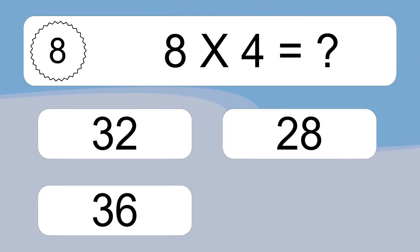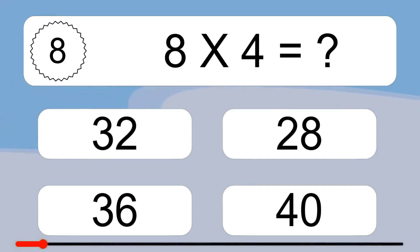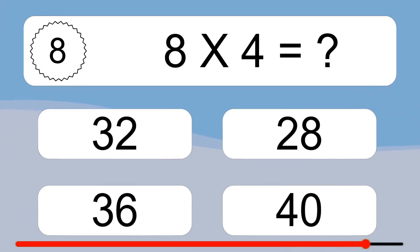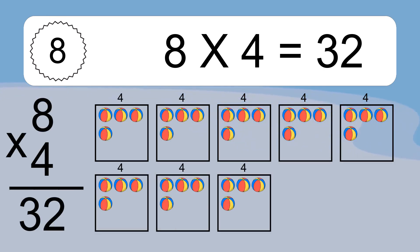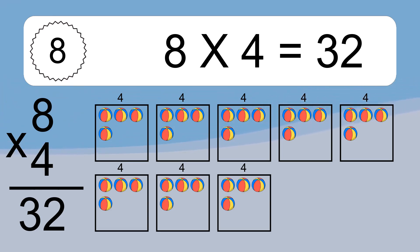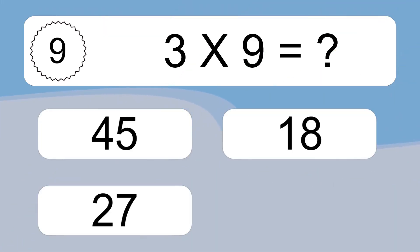8 times 4 equals what? Eight times four equals thirty-two. We have eight boxes and each box has four colorful balls inside. If you count all the balls in all the boxes together, you will have eight times four balls. This equals thirty-two balls.